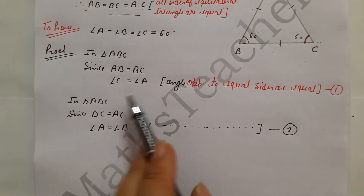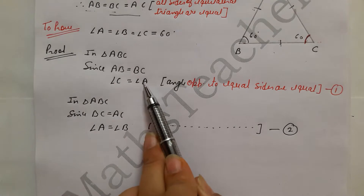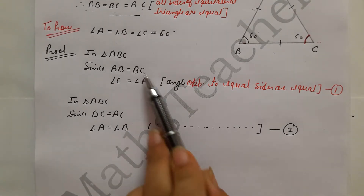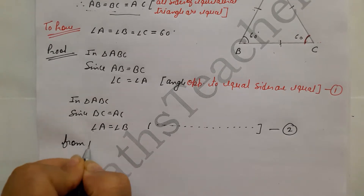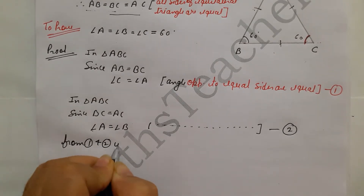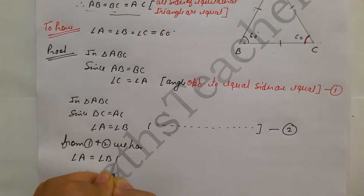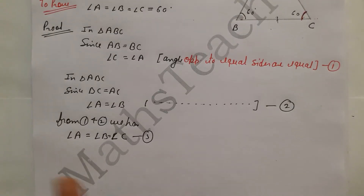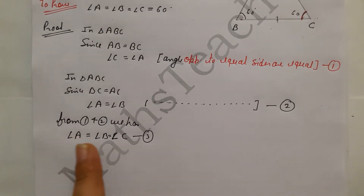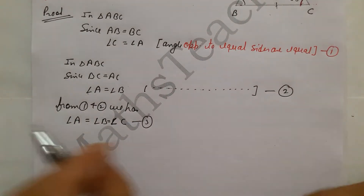From equations one and two, we have angle A equal to angle C, and angle A equal to angle B. This means all three angles are equal: angle A equals angle B equals angle C. Now, since all three angles are equal, we can use the angle sum property to find their value.